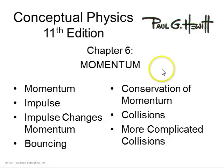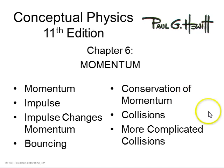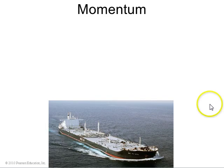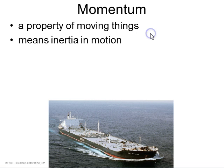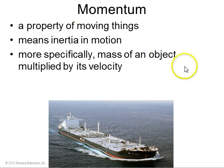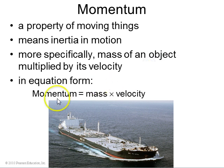Chapter six is on momentum, impulse, and conservation of momentum. First, I want to start by defining momentum. It's a property of moving things, and it means inertia in motion. More specifically, it's the mass of an object multiplied by its velocity.